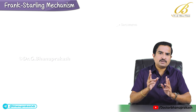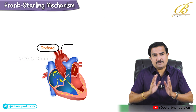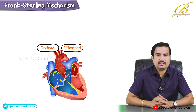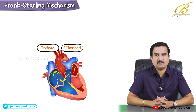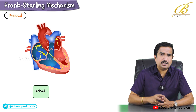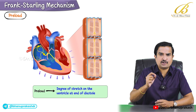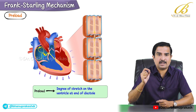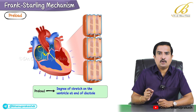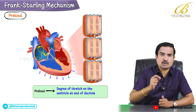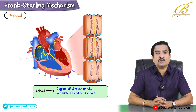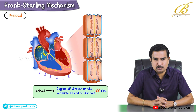When discussing the Frank-Starling mechanism, two important terms are preload and afterload. Preload is essentially the degree of stretch on the ventricles at the end of diastole, which is directly proportional to the end-diastolic volume. Think of preload as the filling pressure that sets the starting length of the cardiac muscle fibers before they contract.